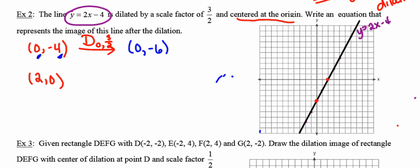And then I'm going to do the same exact thing for the second point. I'm going to dilate that with the center at the origin and a scale factor of 3/2. So 2 times 3/2 is going to be 3. 0 times 3/2 is going to be 0.